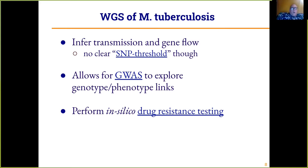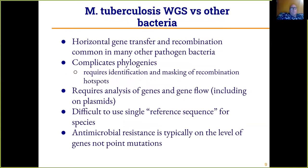Whole genome sequencing is also necessary if we want to use GWAS to explore genotype-phenotype links. Very importantly, we can use whole genome sequencing to perform in silico drug resistance testing, in a way that is sometimes more accurate and sometimes less accurate than phenotypic drug susceptibility testing, or DST.